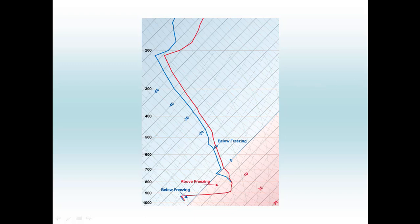That's what different precipitation types look like on soundings. You can use this knowledge to your advantage, especially if you're forecasting in colder seasons and trying to identify any kind of wintry precipitation.